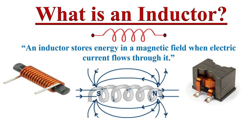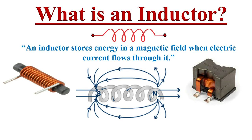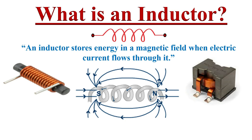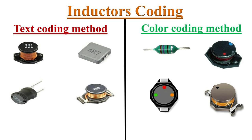In an earlier video, we discussed what an inductor is and how it works. Please do check that video. Inductor values can be determined mainly by two ways: first, the text coding method, and second, the color coding method.